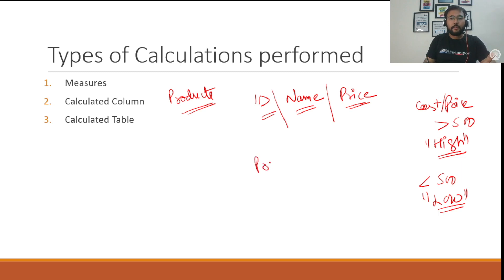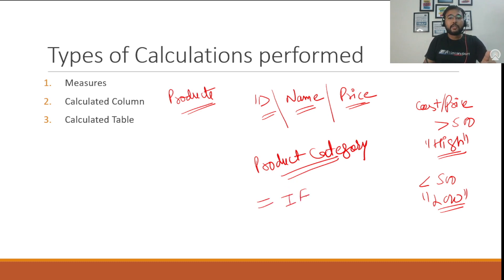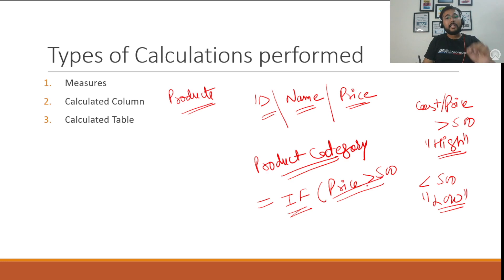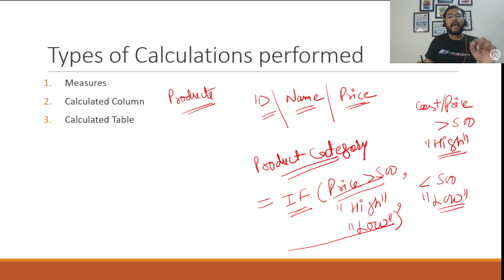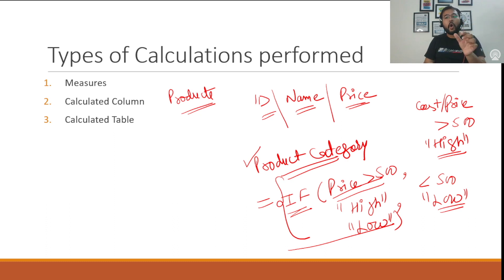We can call this calculated column 'Product Category' — this is the DAX name. On the right side we use a logical test with an IF function. The formula checks: IF(price > 500, 'High', 'Low'). If the output of this logical test is positive it prints 'High', else it prints 'Low'. Using this DAX we create a column called 'Product Category' and every record will have a corresponding value — that is why it is called a calculated column.